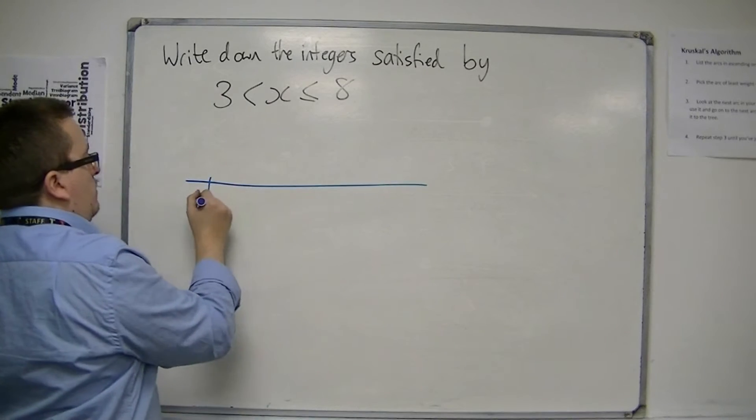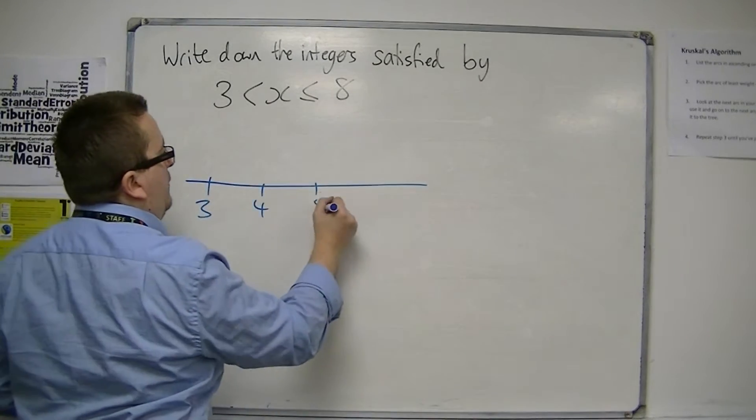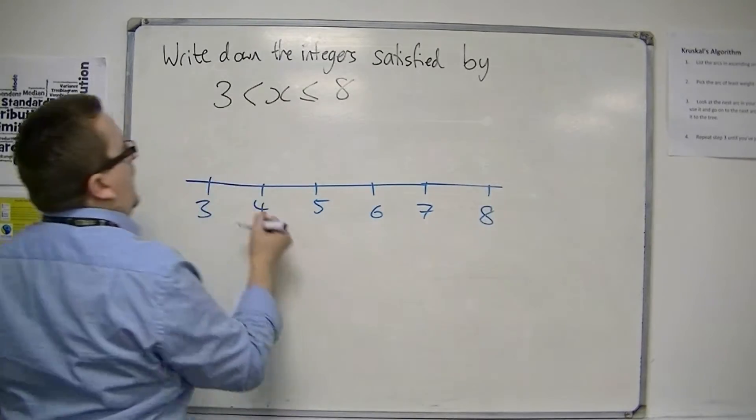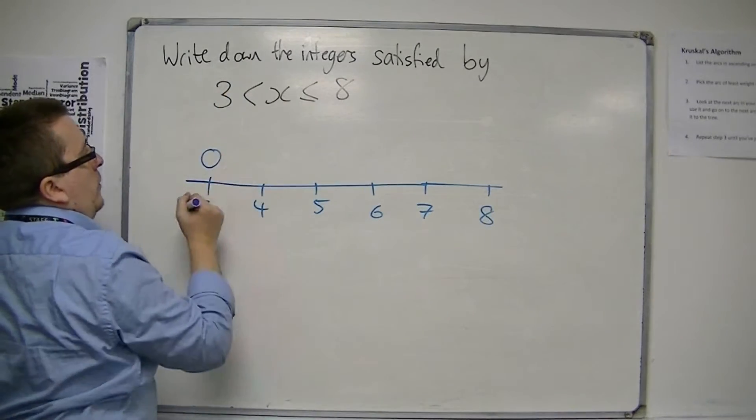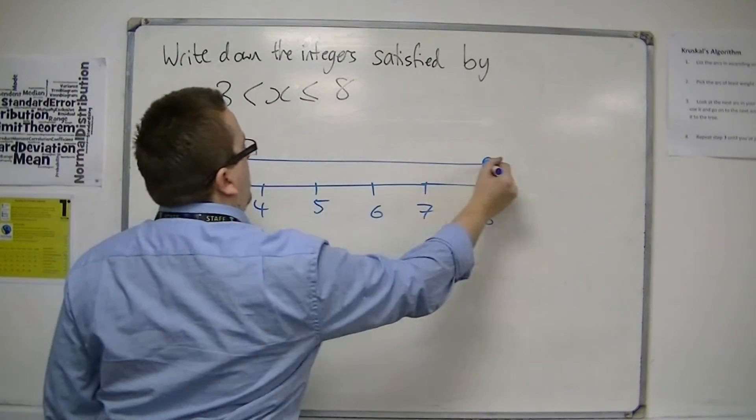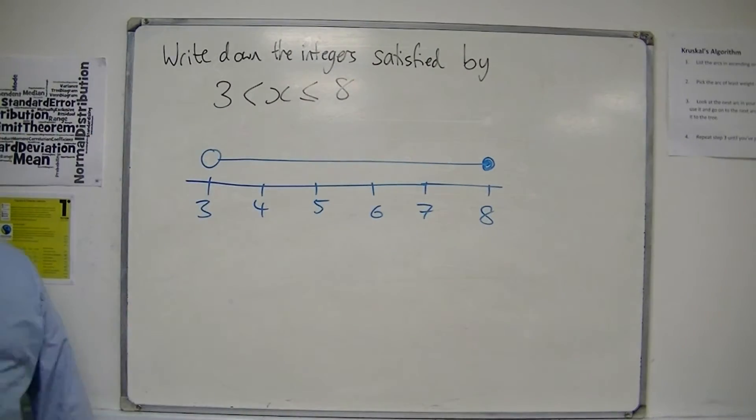And what I showed you was that if the number line is like so, and it's a hollow dot on the 3, a solid dot on the 8, there's my inequality represented on a number line.